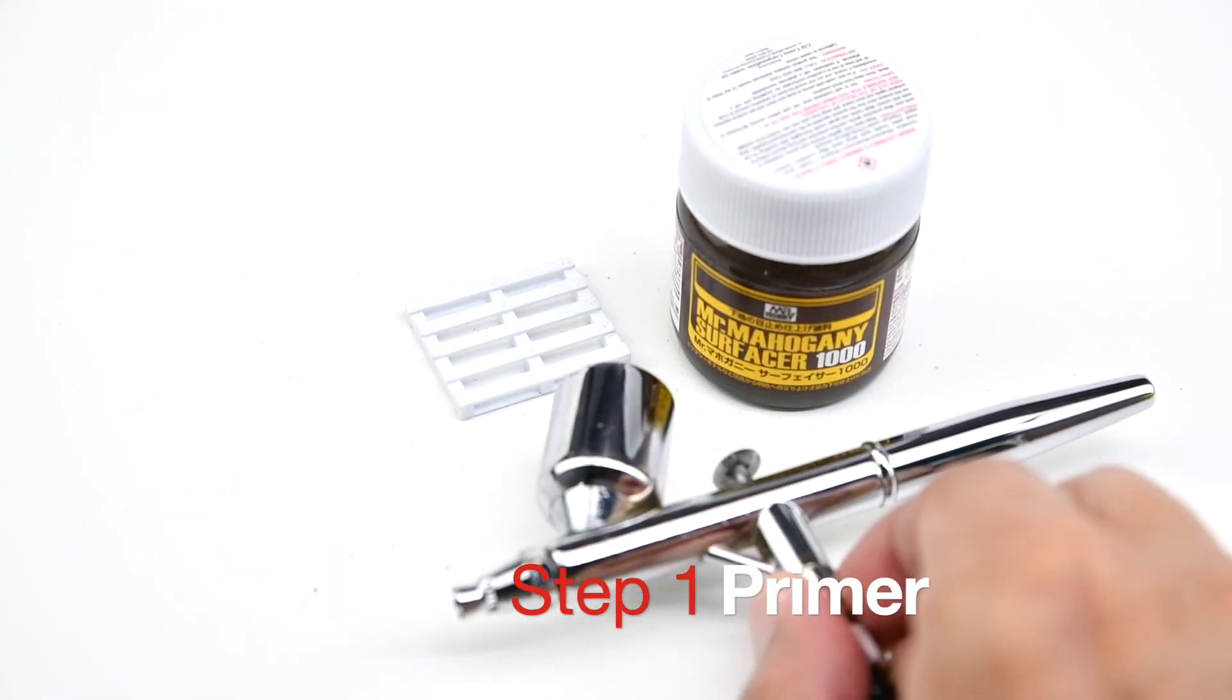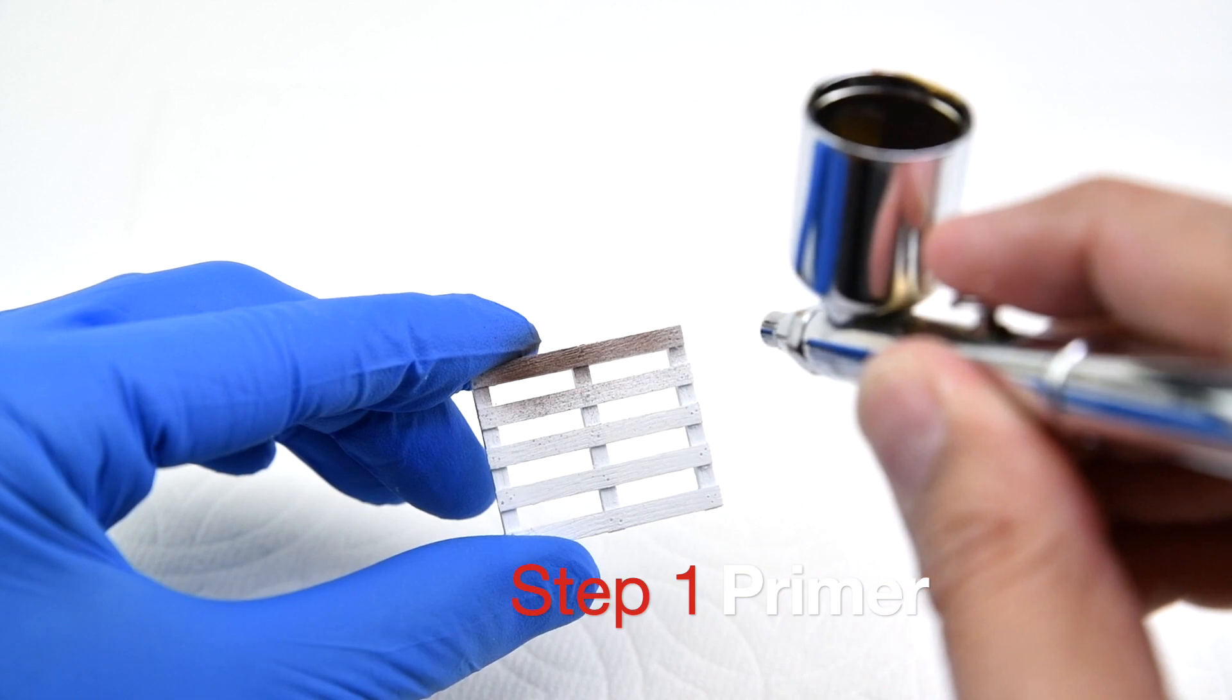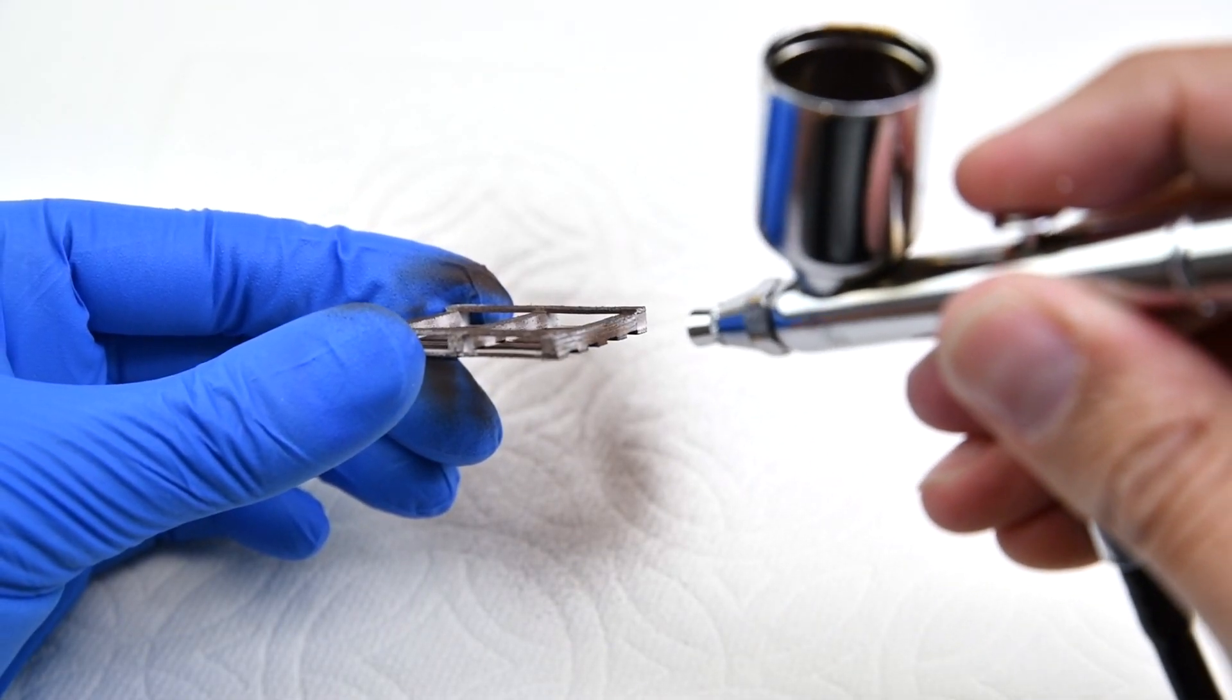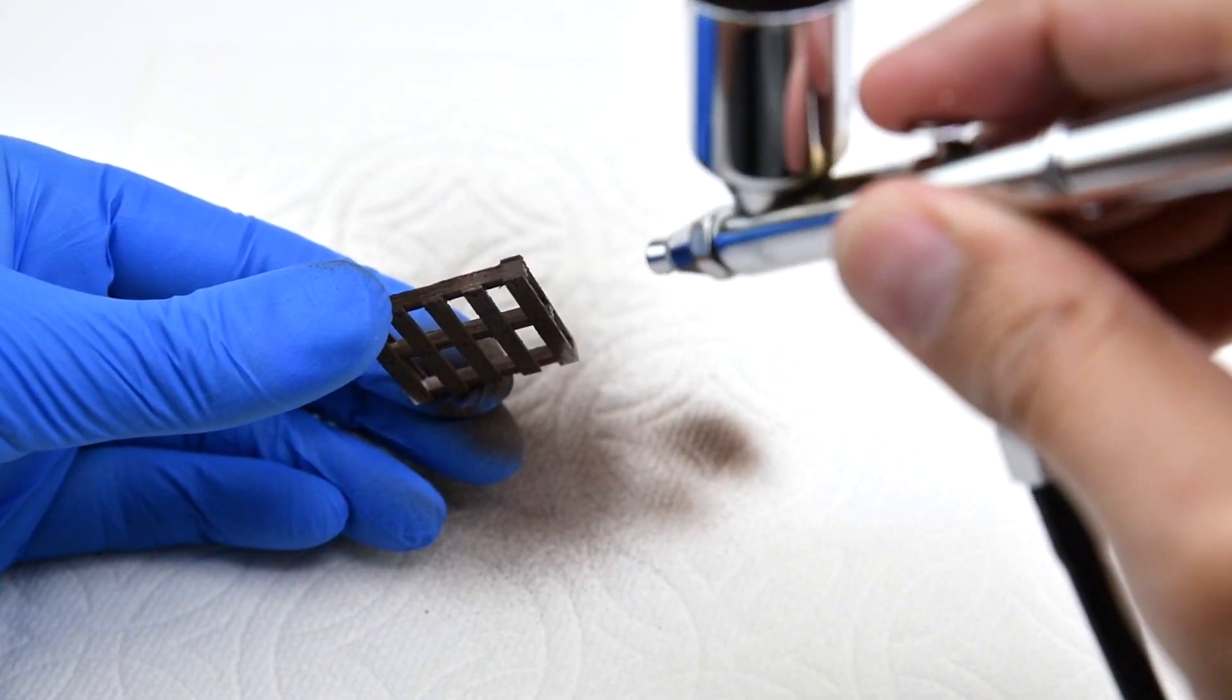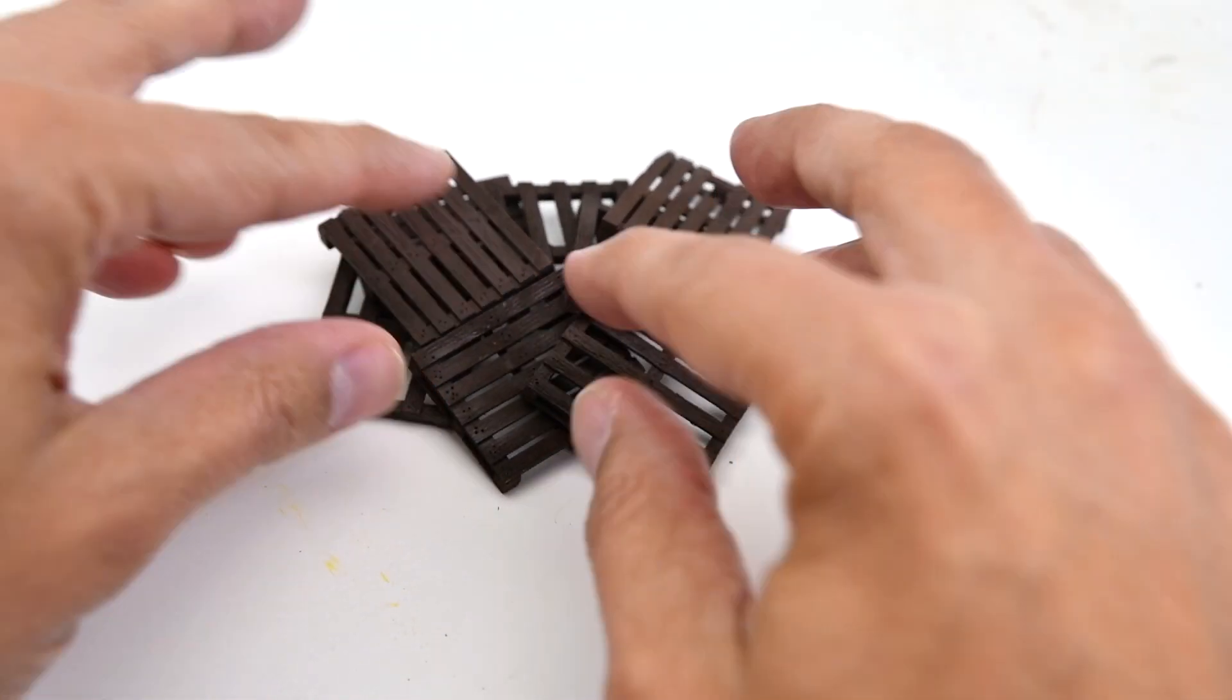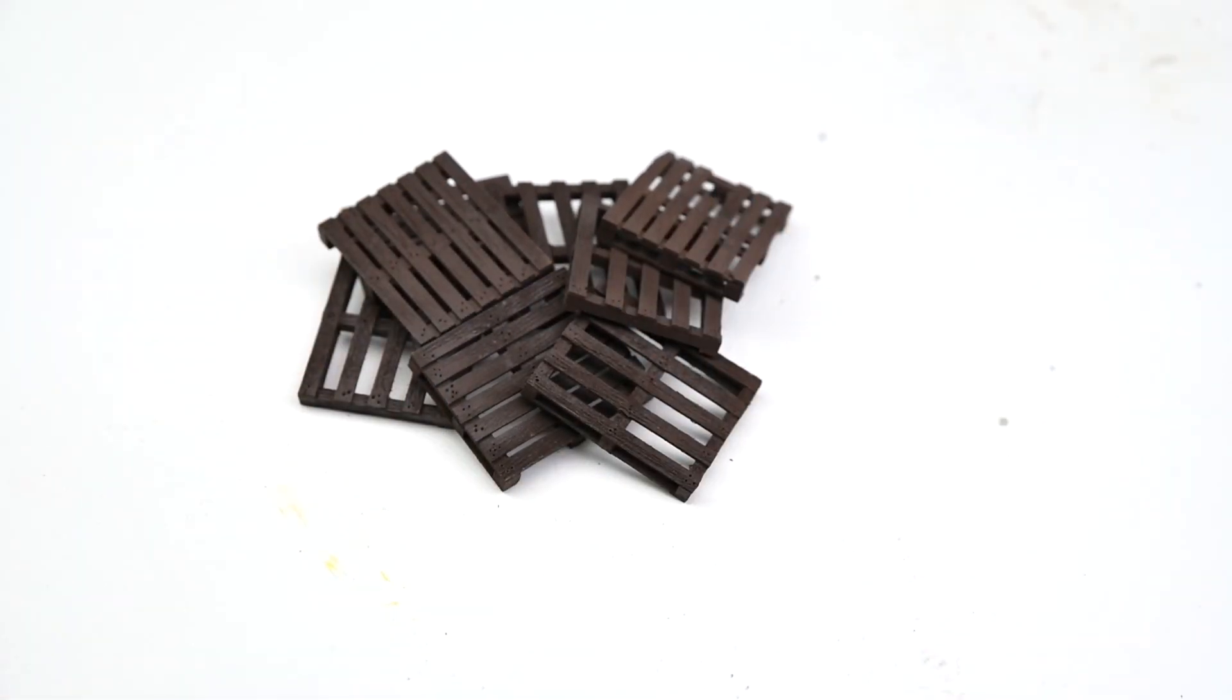We start by priming the pieces. This will give us a solid foundation for the next steps as we proceed in adding more paint layers. Also, because I chose a dark brown color, it will give us the opportunity to make sure no white background is left visible. At this stage of the process, it's very important that we cover all nooks and crannies.